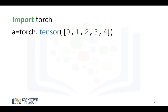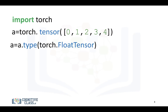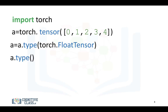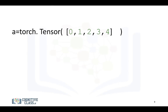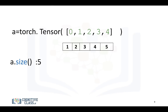We can also change the type of the tensor using the method type(), where the argument is the type of tensor we would like to cast it to — in this case, a float tensor. So the type of A will be float tensor. We can also find the size of the tensor — in this case it's 5 — and the number of dimensions is 1.